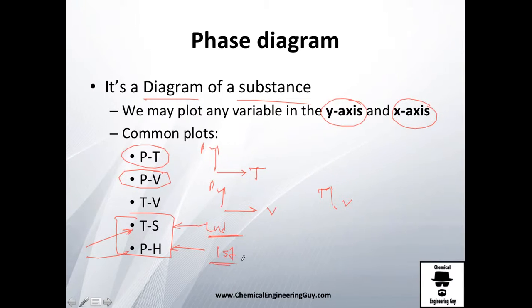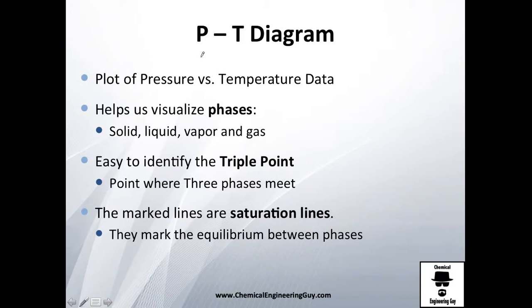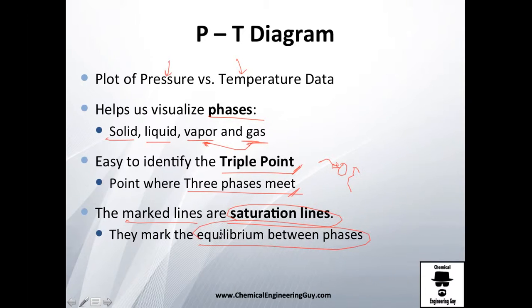About pressure-temperature diagrams, we're going to plot pressure versus the temperature. It will help us to visualize easily the phases: solid, liquid, vapor, and gas. And why do I separate vapor and gas? We're going to see that later. It's very easy to identify the triple point. We're going to make maybe a slight letter, but it's essentially where the three phases meet. And you probably don't know that we could have ice, water, and vapor in one single point. Then we're going to be marking the saturation lines, which are the equilibrium lines between phases.